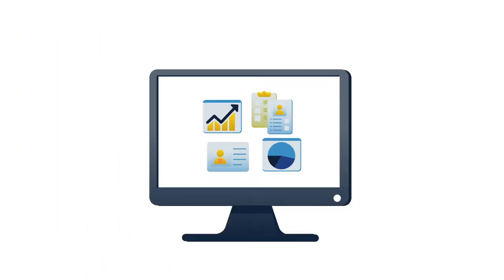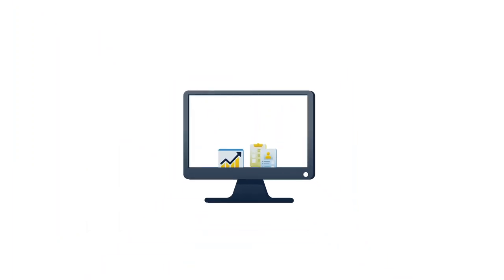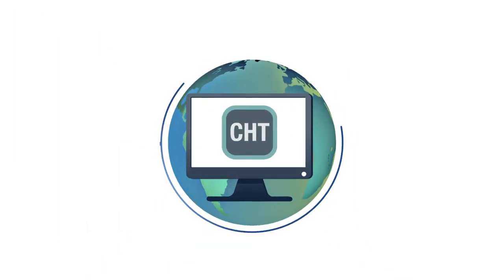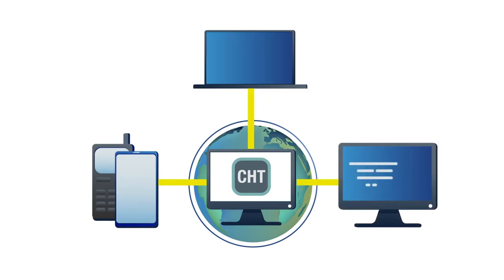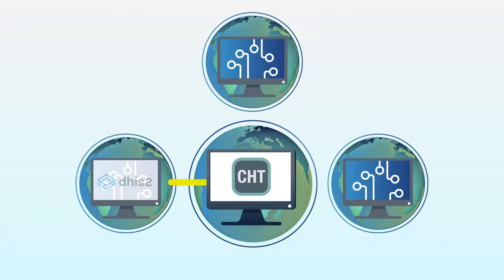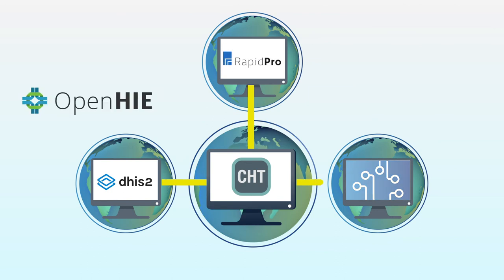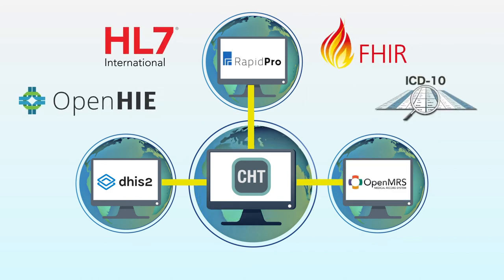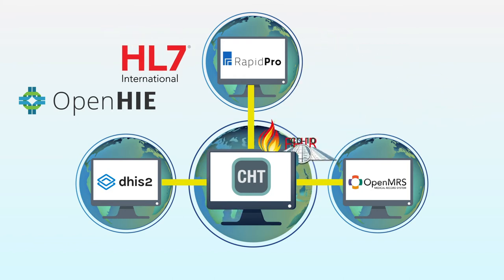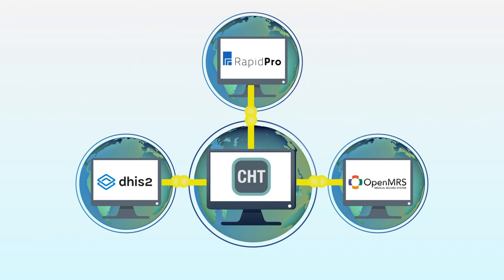To make health data more useful for care providers and public health officials, the CHT is designed to easily integrate and exchange data with other health systems and can be used with other global goods. Open HIE, HL7, FHIR, and ICD-10 are examples of healthcare-related protocols and standards that can be used to achieve interoperability with the CHT.